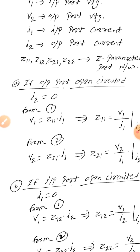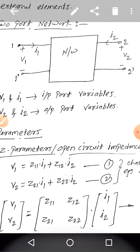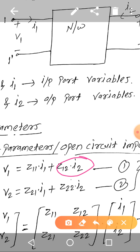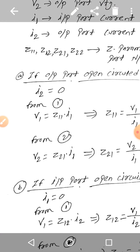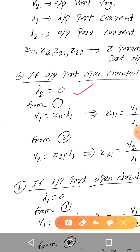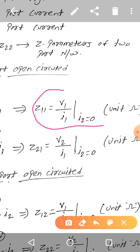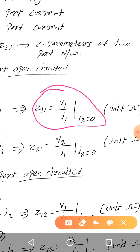Now let us find Z11 and Z21. In the characteristic equation, if we put I2 equal to 0, those terms become 0. I2 equal to 0 means the output port is open circuited. When the output port is open circuited, I2 will be equal to 0. So from equation 1: V1 equals Z11·I1 plus Z12·0, which gives V1 equals Z11·I1. This implies Z11 equals V1 divided by I1, provided that I2 equals 0. By open circuiting the output port, we can get the value of Z11.